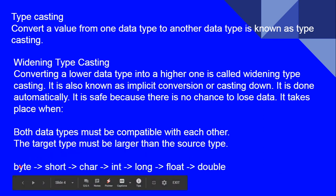This is the order in which widening typecasting happens: byte to short, short to char, char to int, int to long, long to float, and float to double. The memory capacity increases in this order — byte stores the least bits and double requires the most memory space. This is the order of widening type casting.